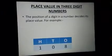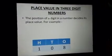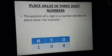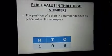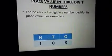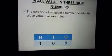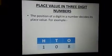Now we will learn the next concept about place value in three digit numbers. The position of a digit in a number decides its place value. As you can see here is a number 108. Eight is in ones place, zero is in tens place, and one is in hundreds place. We have written these numbers according to their place values here.